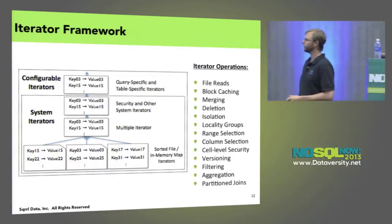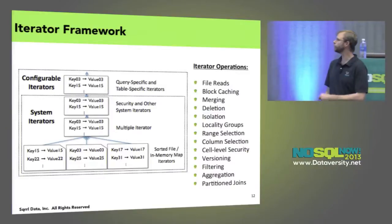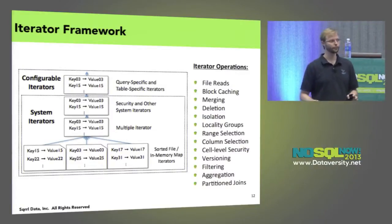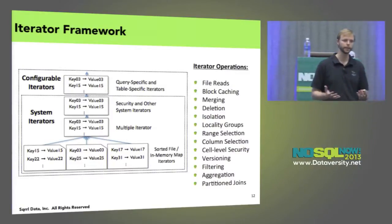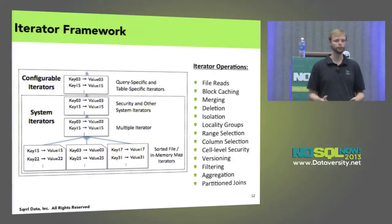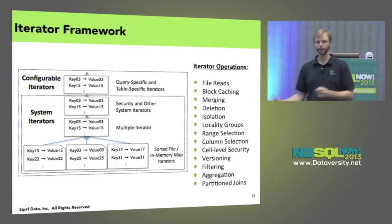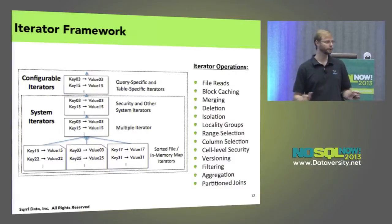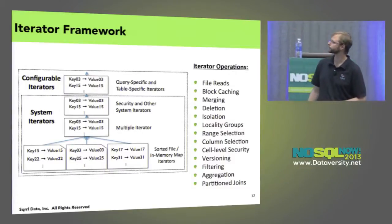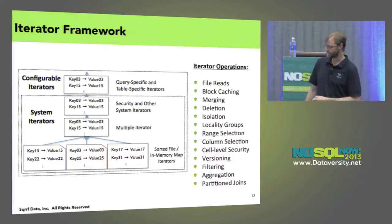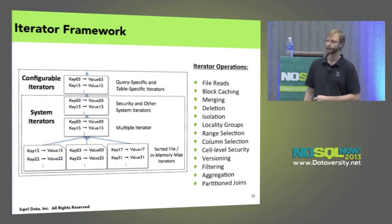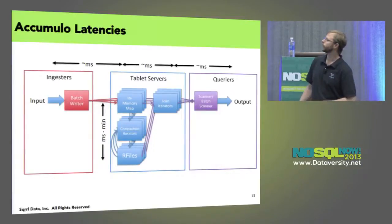The iterator framework allows us to do a huge number of operations, and this is in fact where most of the logic for dealing with key-value pairs in general in Accumulo resides. All of these things are actually implemented as iterators inside of the tablet server — not just analytical capabilities but also core management of key-value pairs. And that's where a lot of the security is implemented inside of Accumulo as well.